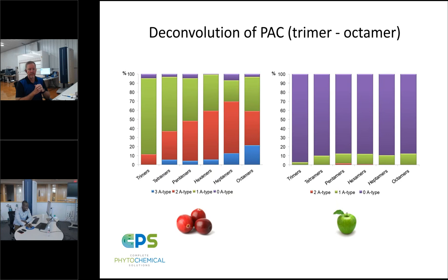Question: Besides cranberry, for what other dietary ingredients are you currently seeing adulteration issues? In the marketplace right now, one of the biggest and fastest growing herbal supplements is elderberry. With the COVID environment, there was a tremendous increase in consumption of elderberry products as individuals looked for alternative healthcare solutions. Because of this growth, elderberry has become a high target for adulteration, and that's one of the botanicals we're looking at closely and trying to bring authentication solutions to.